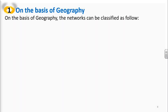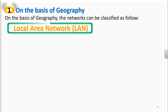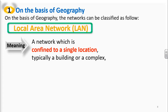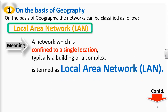In this session, we will talk about only on the basis of geography, and specifically about local area network, LAN. What is LAN? It is a network which is confined to a single location, typically a building or a complex. A network confined to a single location or a particular building or complex is termed as local area network.